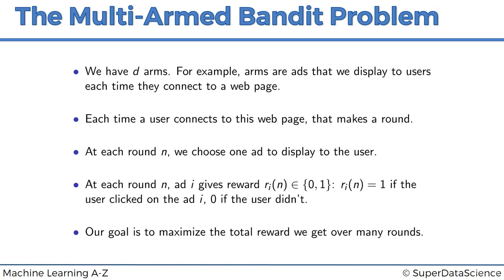A quick summary of the multi-armed bandit problem: we have d arms — for example, arms are ads that we display to users each time they connect to a web page. A modern application of this problem is advertising. The algorithms we're going to apply can be used to solve a problem where you're displaying ads.